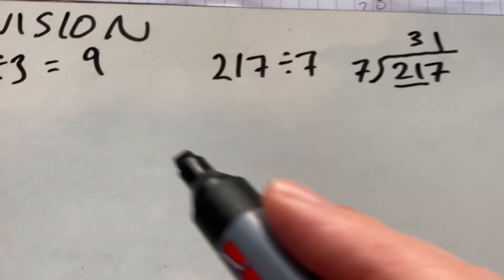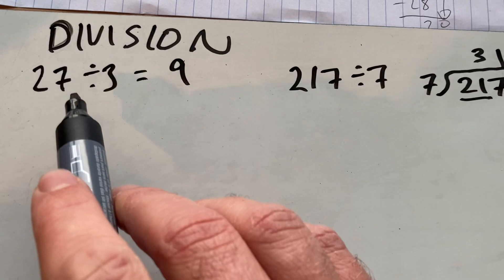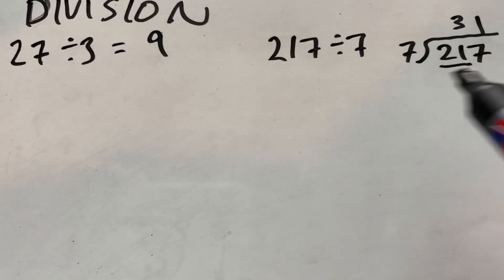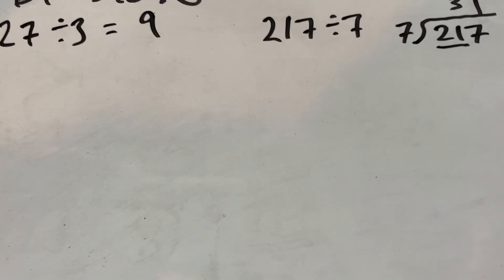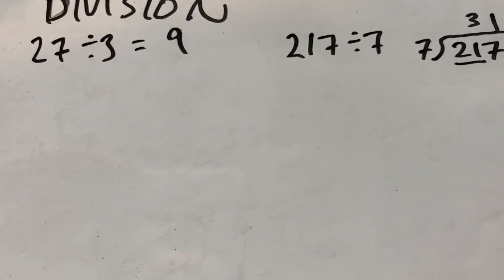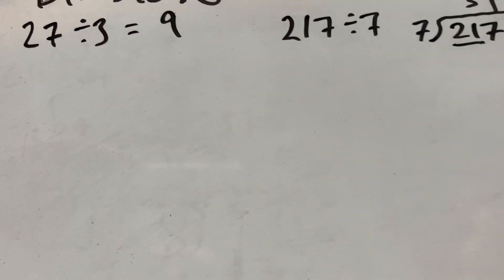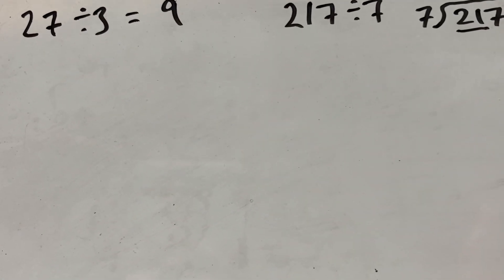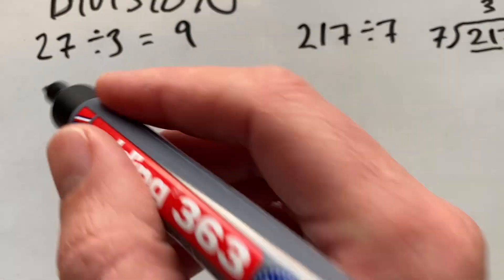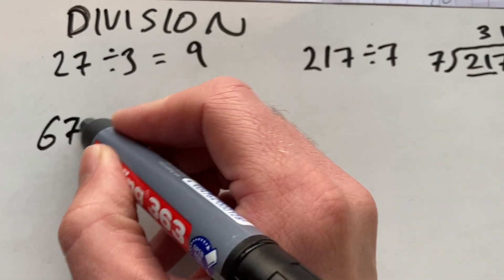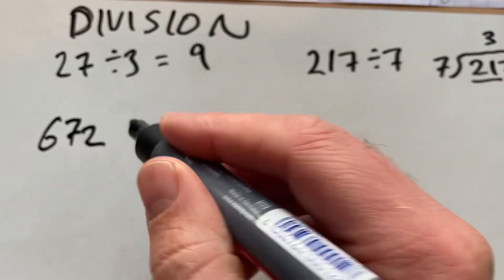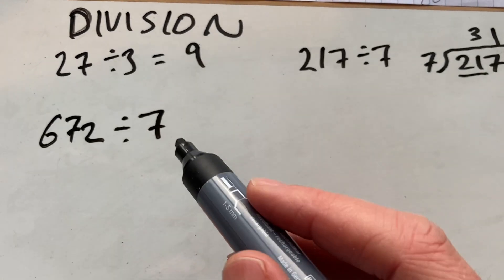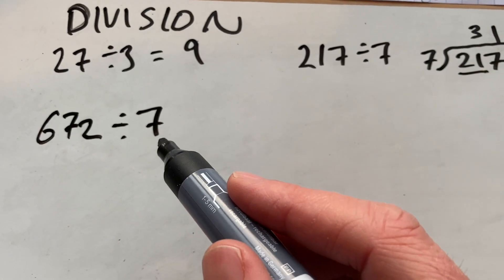So those are two techniques: either knowing our times tables or using the bus stop method. Now, some students know about a thing called short division. Let's take a number like 672 and divide that by 7. I'm choosing 7 a lot because it's not the easiest times table to know.